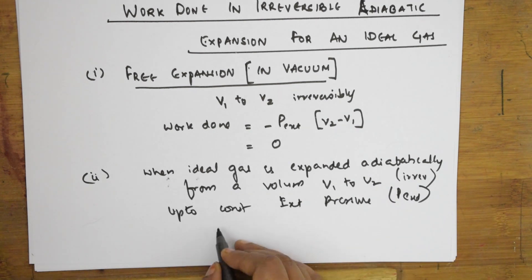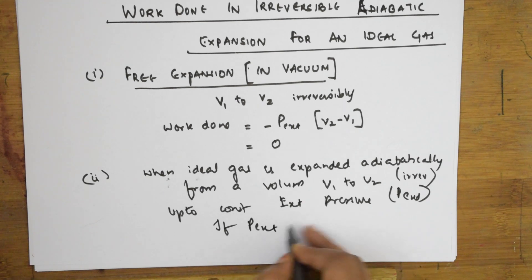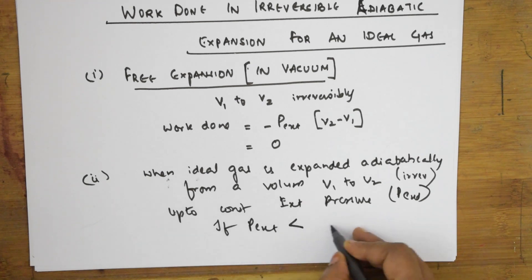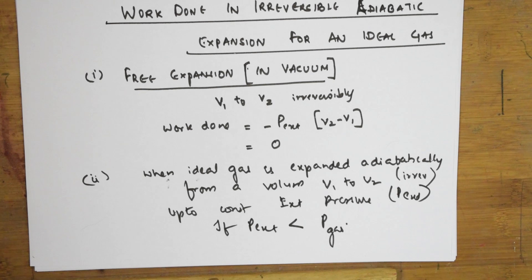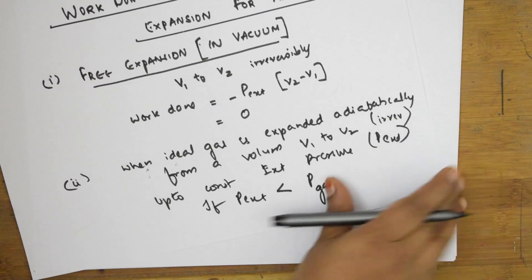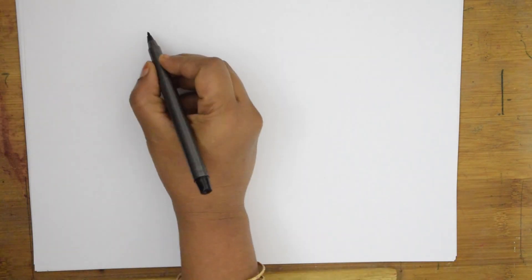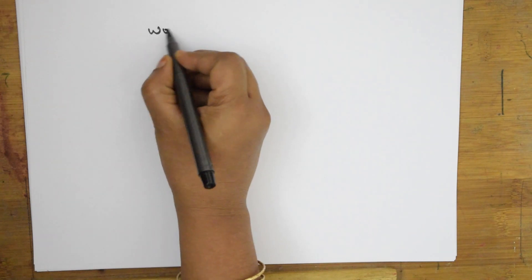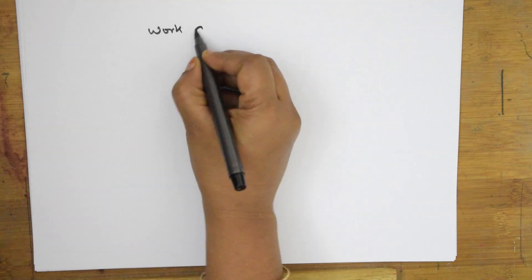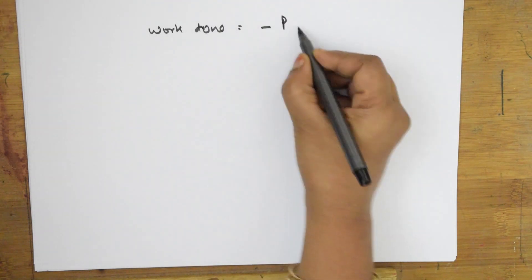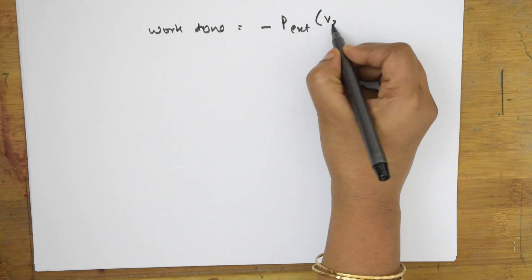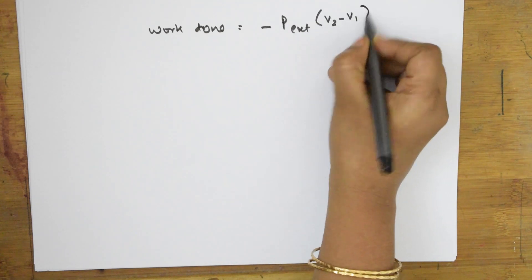One more condition: p-external is less than p-gas. With these conditions, the work done will be minus p-external times (V2 minus V1).